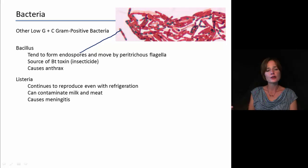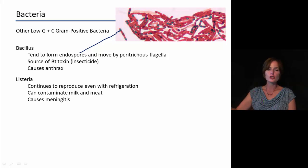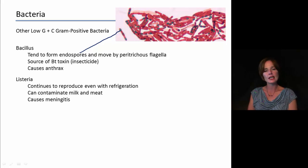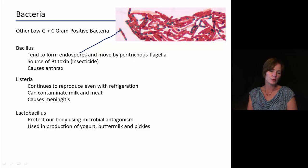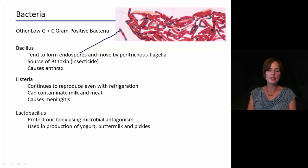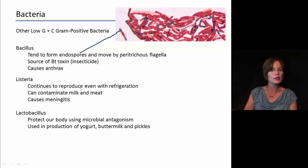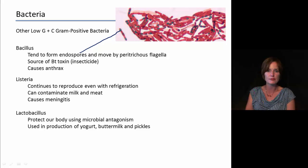Another group is Listeria, which has commercial significance because it can reproduce even under refrigeration, meaning it can contaminate milk and meat and cause meningitis — a serious health concern. On the positive side, Lactobacillus protects the body using microbial antagonism, fighting off other microbes. It is used in the production of yogurt, buttermilk, and pickles. Yogurt labels will indicate that they contain live cultures of Lactobacillus, which has positive benefits for us.